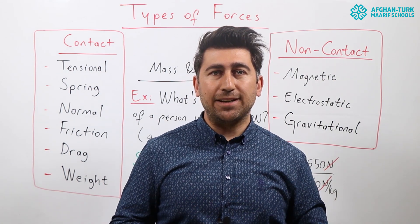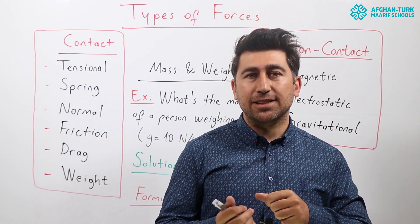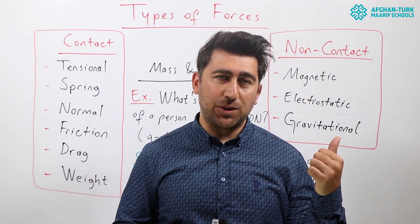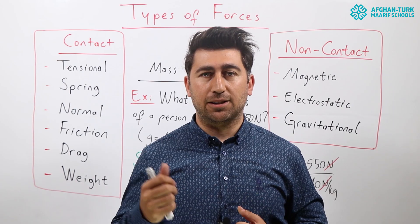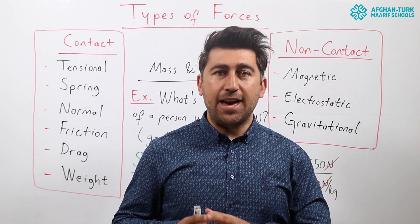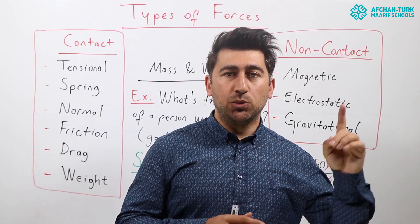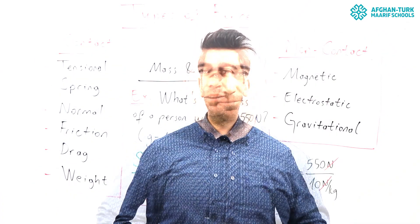The other operation is subtracting forces. Two people are pulling the box in opposite directions — one to the right and one to the left. If we add one more person to the right side, the resultant force becomes 2F minus F, which equals F. So the resultant force will be F.